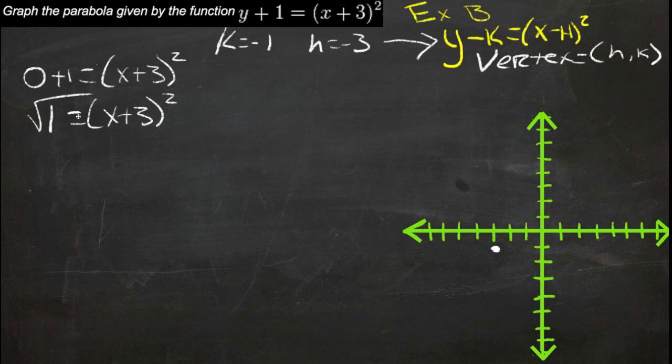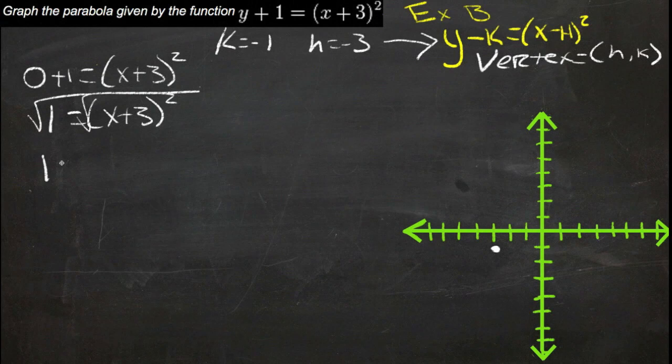So now we can just take the square root of both sides, take the square root of both sides, we get 1, and that's equal to positive or negative x plus 3.